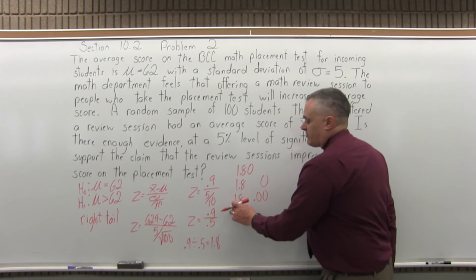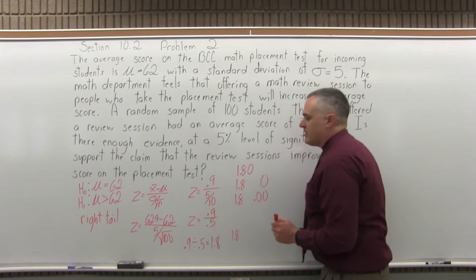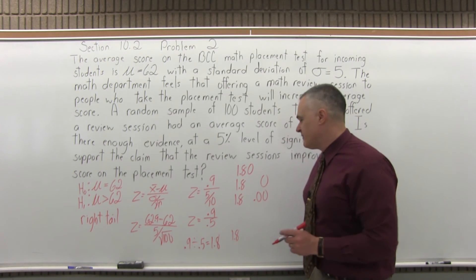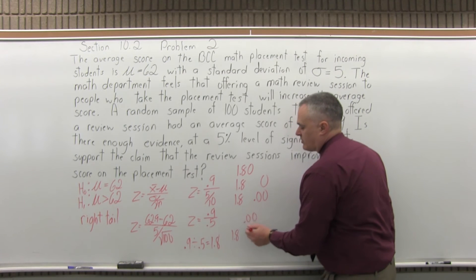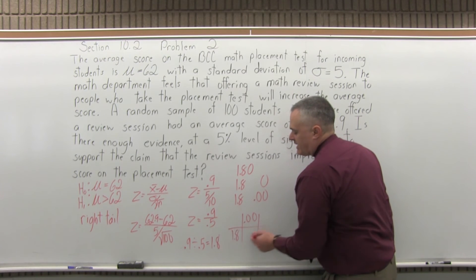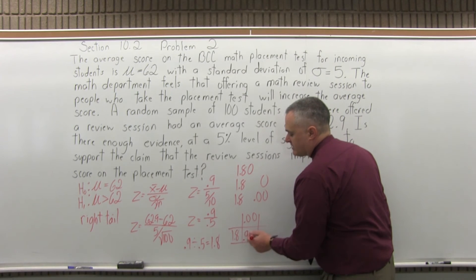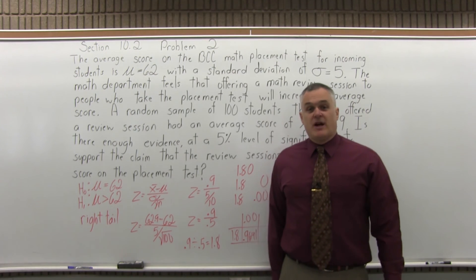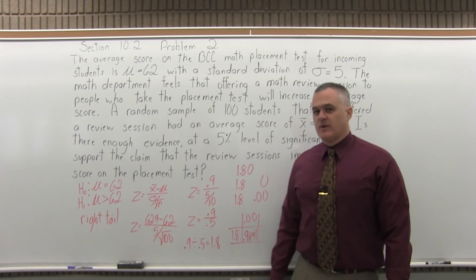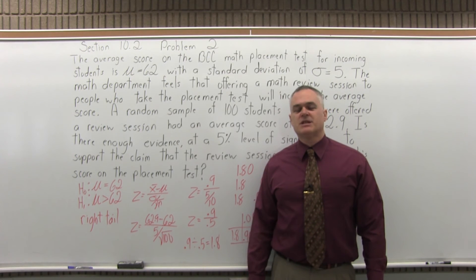So the digits from the left, the 1.8, are what row of that standard normal chart I look in. The digits from the right with a 0.0 in front tells me what column of the standard normal chart I look in. And I see where the row and the column intersect. They all intersect at a value of 0.9641. So that was step 5. Look up the value for z. We did. We looked it up. We got 0.9641.